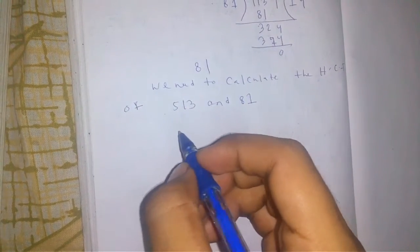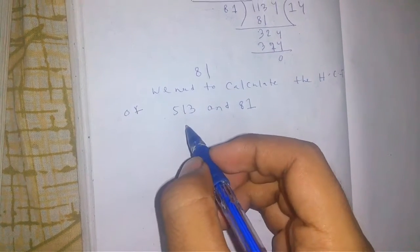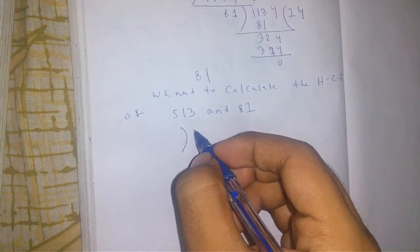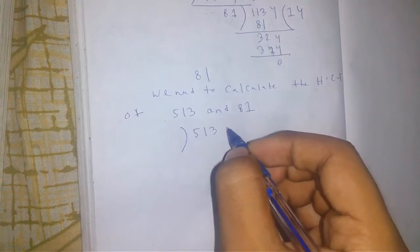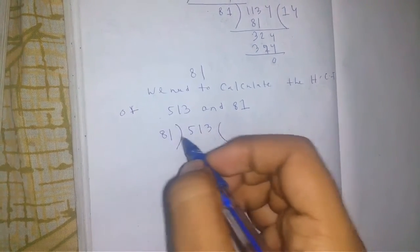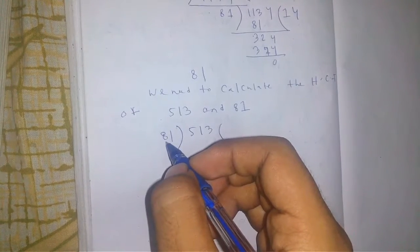Now let's find the HCF using division procedure. We take 513 as the dividend and 81 as the divisor, as it is smaller.